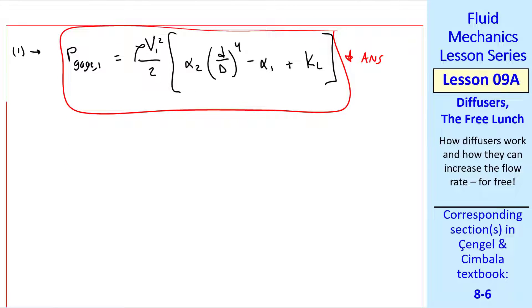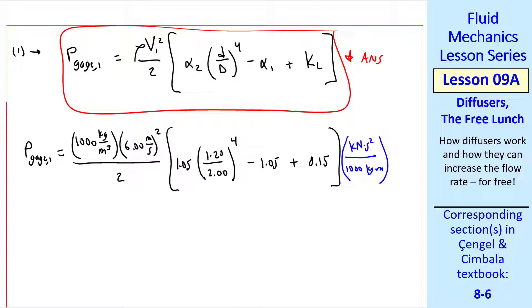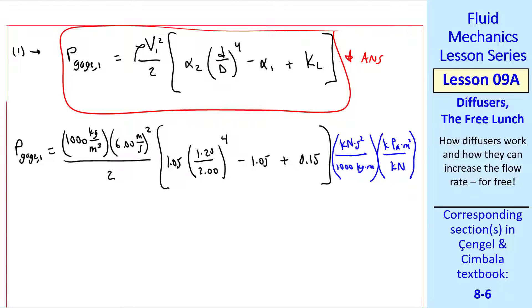Now we plug in the numbers rho V alpha two little D big D alpha one and KL. A unity conversion ratio and another unity conversion ratio, which gives us negative 13.751 kPa. To our standard three digits in engineering. My answer is negative 13.7 kPa.